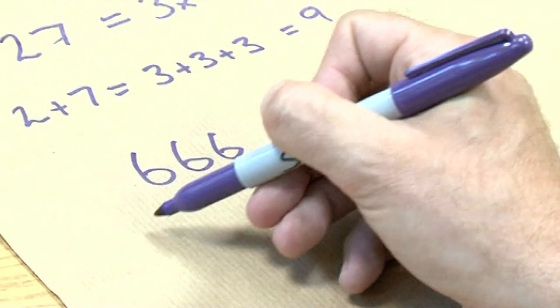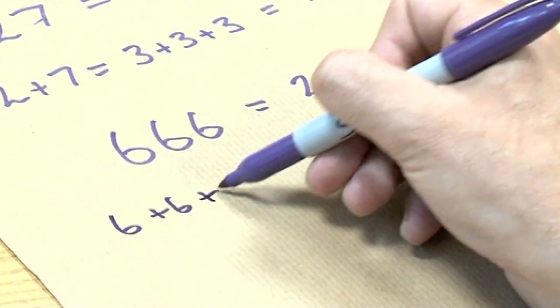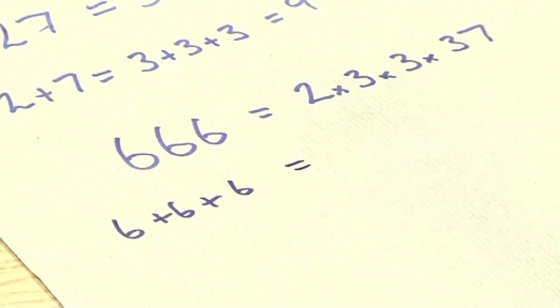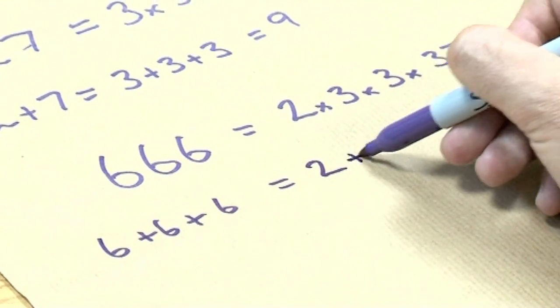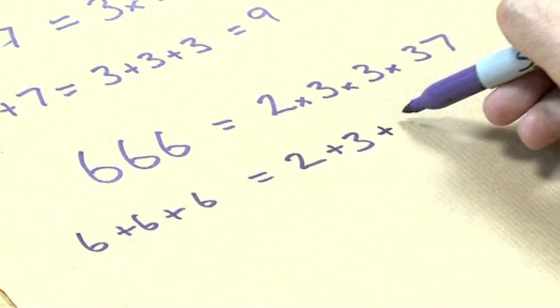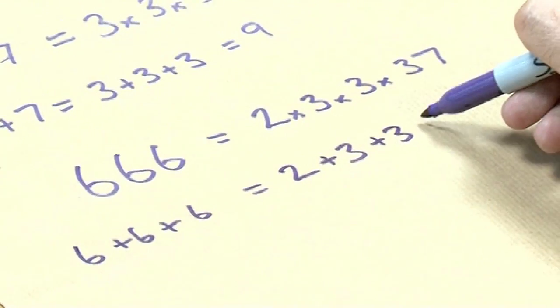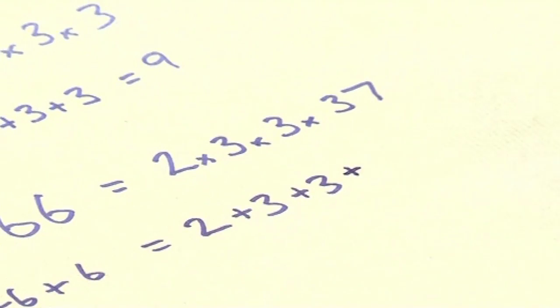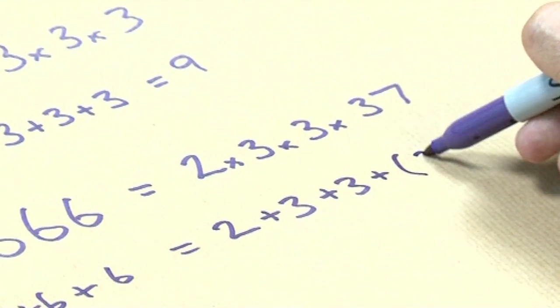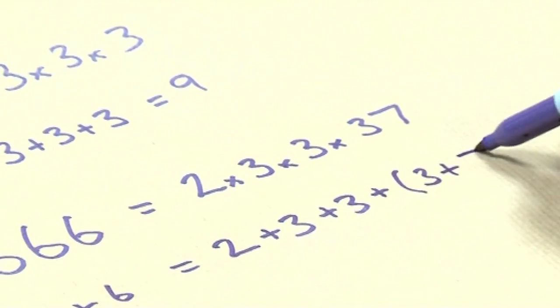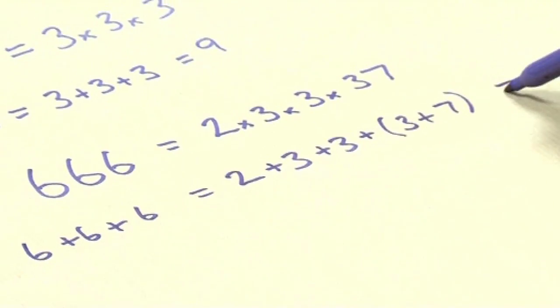Now let's add these digits together. So 6 plus 6 plus 6. And that is the same as 2 plus 3 plus 3. And now comes the subtle bit. You don't add 37. You break 37 up into its digits. So let me put 3 plus 7.